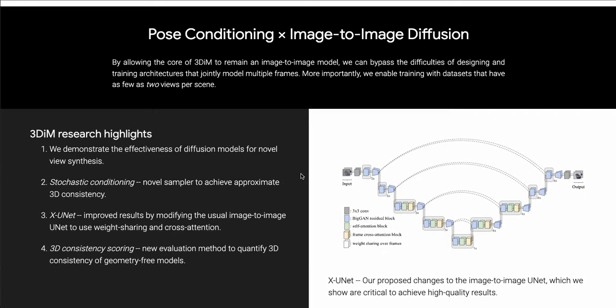So yeah. And then at a high level, they surmise their technical approach by calling it pose conditioning, along with image to image diffusion, which they articulate as, by allowing the core of 3D to remain an image to image model, a diffusion model, we can bypass difficulties of designing and training architectures that jointly model multiple frames. More importantly, we enable training with datasets that have as few as two views per scene, which is their way of saying we train this on data good enough that you don't actually have to have really accurate extensive ground truths to make this approach work.